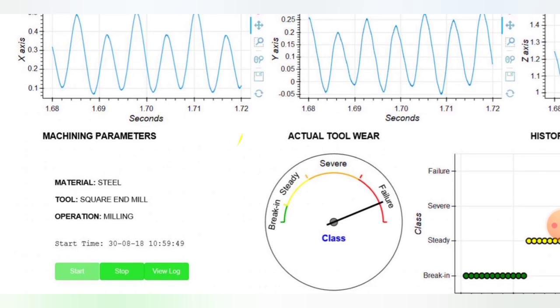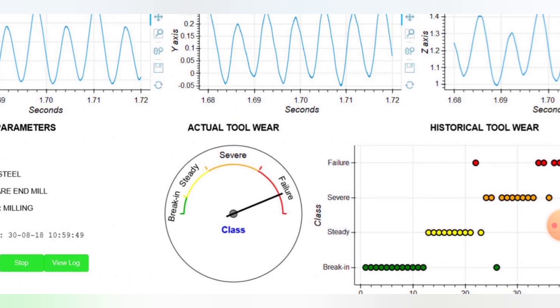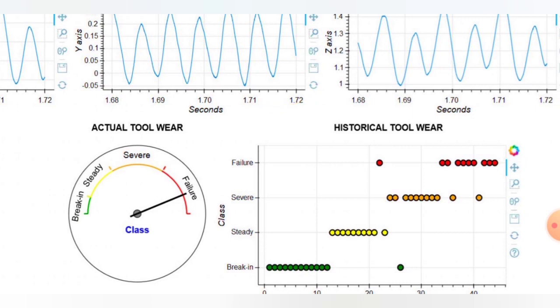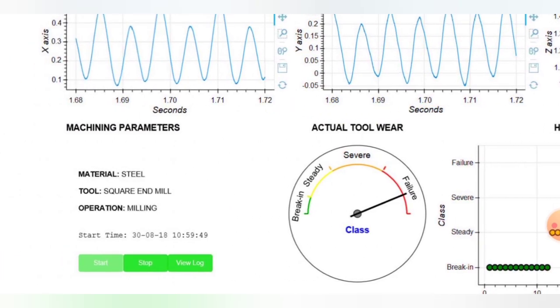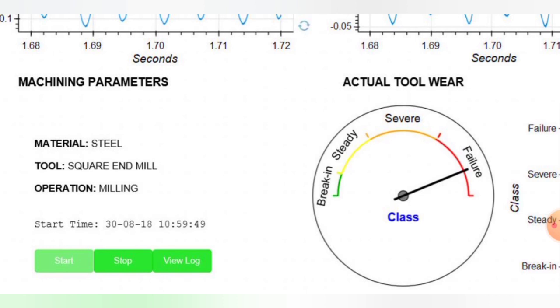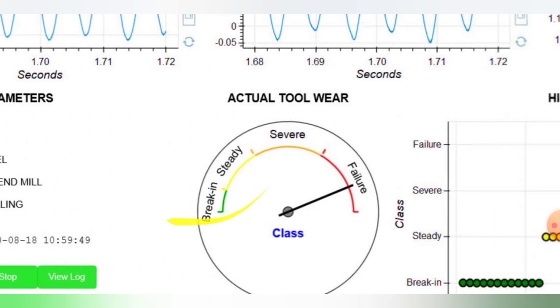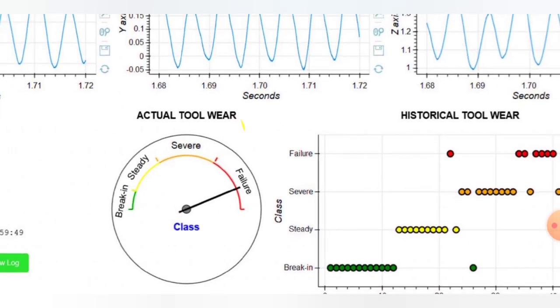The machining parameters, actual tool wear, and historical tool wear are the statistical figures. In the machining parameters, the material of the tool is steel, the tool is square end mill type, and the operation is milling. Its starting time is date 3-38-18 at time 10:59 and 49 seconds.